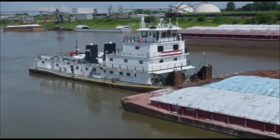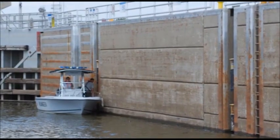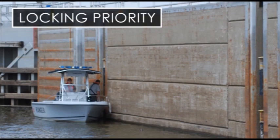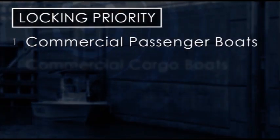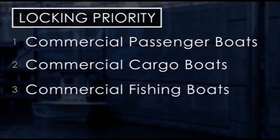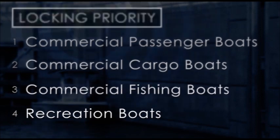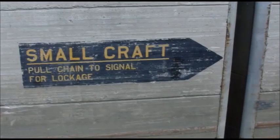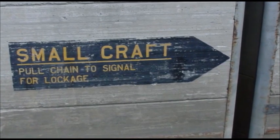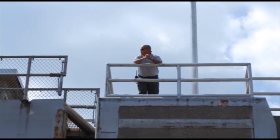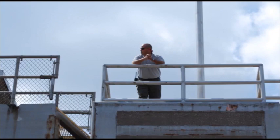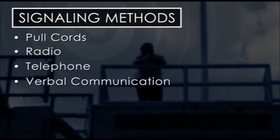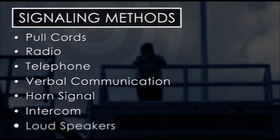Certain vessels have higher priority when it comes to locking through. U.S. government vessels, including military aircraft and mail boats, have precedence of passage over all other vessels. Priority then goes to commercial passenger boats, commercial cargo carrying boats, commercial fishing boats, and last but not least, recreation boats. Recreation boats may be required to wait their turn or may be allowed to lock through with other craft. You must signal the lock operator to request permission to enter the lock. Know how to properly signal a lock before you go. Methods vary depending on the location and may include pull cords, radio, telephone, verbal communication, horn signals, intercom, and loudspeakers.